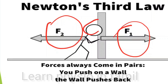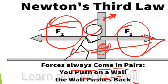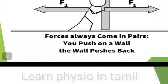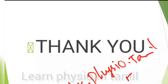We have force F1 and F2 — two forces. This man applies F1 force to the wall, and the wall applies F2 force back. Push on a wall and the wall pushes back. Force always comes in pairs. Thank you for watching this video. You can follow me at LearnPhysio in Tamil. See you all in the next video, bye.